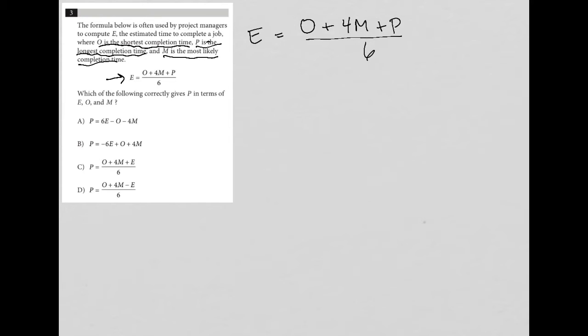Which of the following correctly gives P in terms of E, O, and M? Okay. So this question really is what I call a rearrangement question. Rearrangement, which means we're not really solving anything. We're just rearranging things.